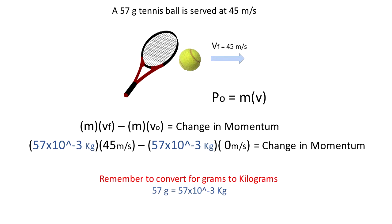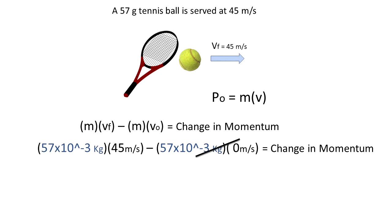So mass times velocity final is going to be the mass times 45 meters per second, minus the mass. But the velocity initial was zero because the ball starts from rest, so we are going to cross out that part and it is not going to count.